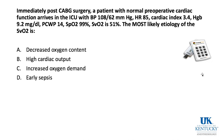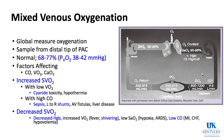A question: post-CABG, a patient arrives in the ICU with BP 108/62, HR 85, cardiac index 3.4, hemoglobin 9.2, wedge 14, SpO₂ 99%, and mixed venous of 51%. Normal mixed venous is about 70–75%. The most likely etiology of this low mixed venous is increased oxygen demand — classic for a patient whose neuromuscular blockade and anesthetics are wearing off and who begins to shiver, consuming more oxygen and dropping the mixed venous saturation.